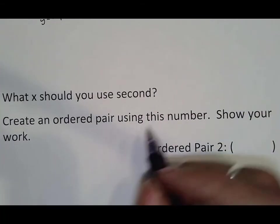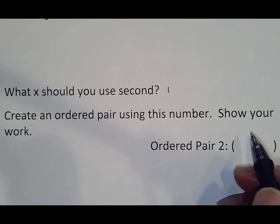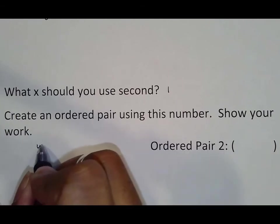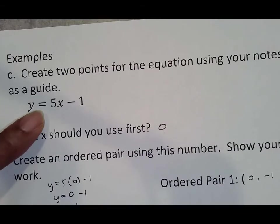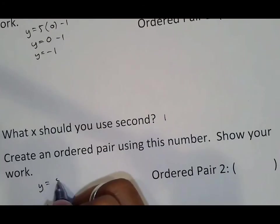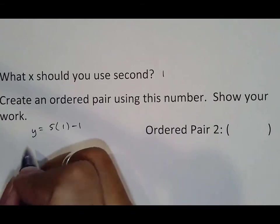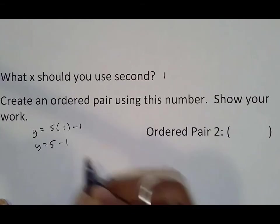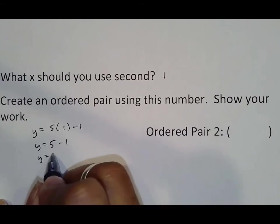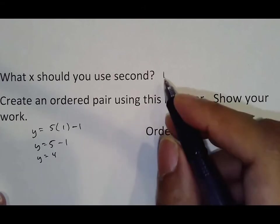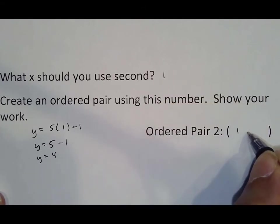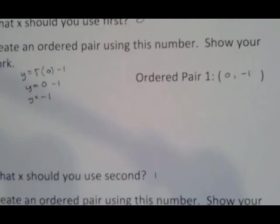What x should you use second? Always one. Create an ordered pair using this number. So again, you'll do y equals, using this equation, five x minus one. So five parentheses one minus one, which then turns into five minus one, which then becomes four. Those are your numbers. One comma four. I don't think there's anything else to do on that because again, that's it.